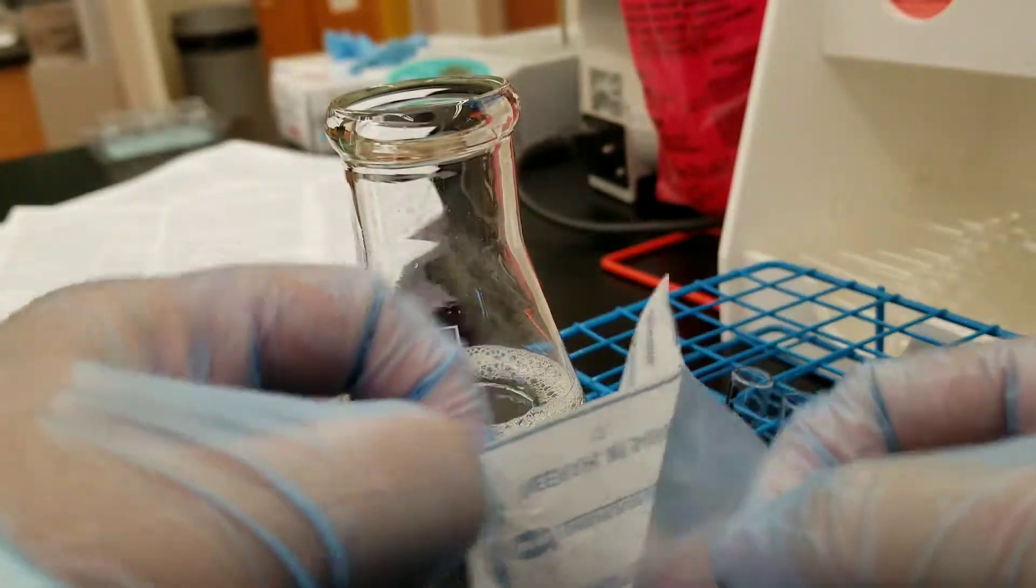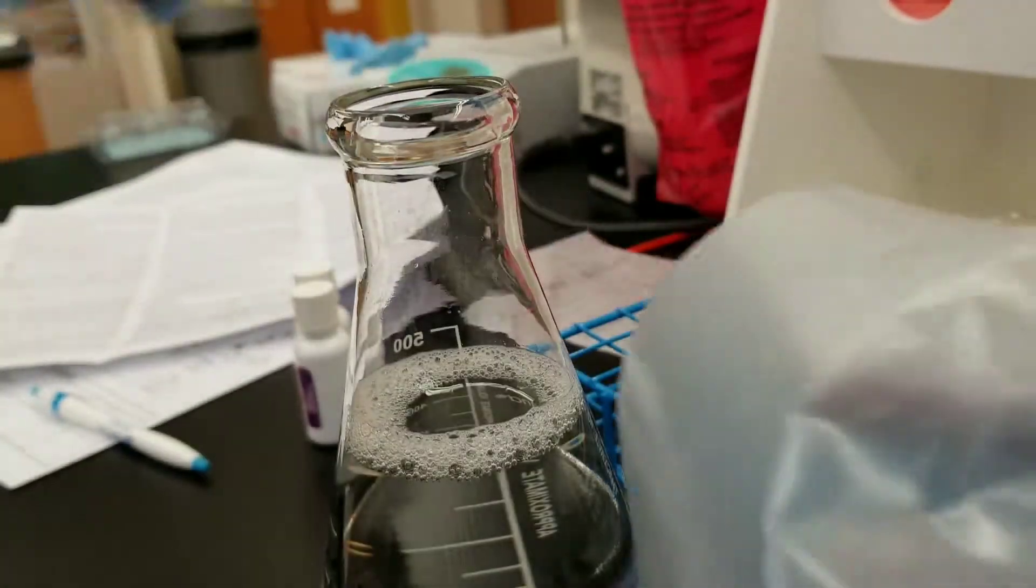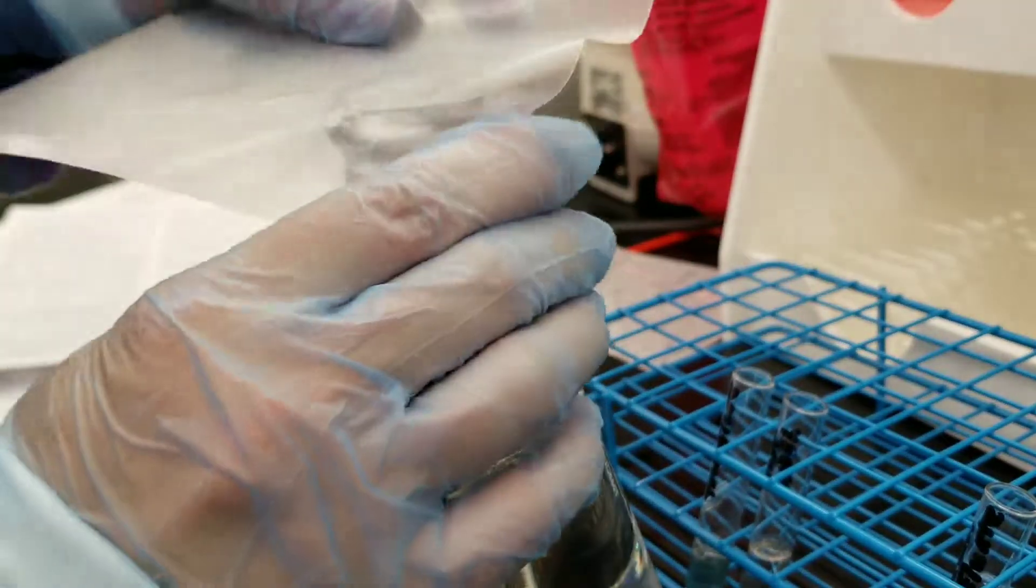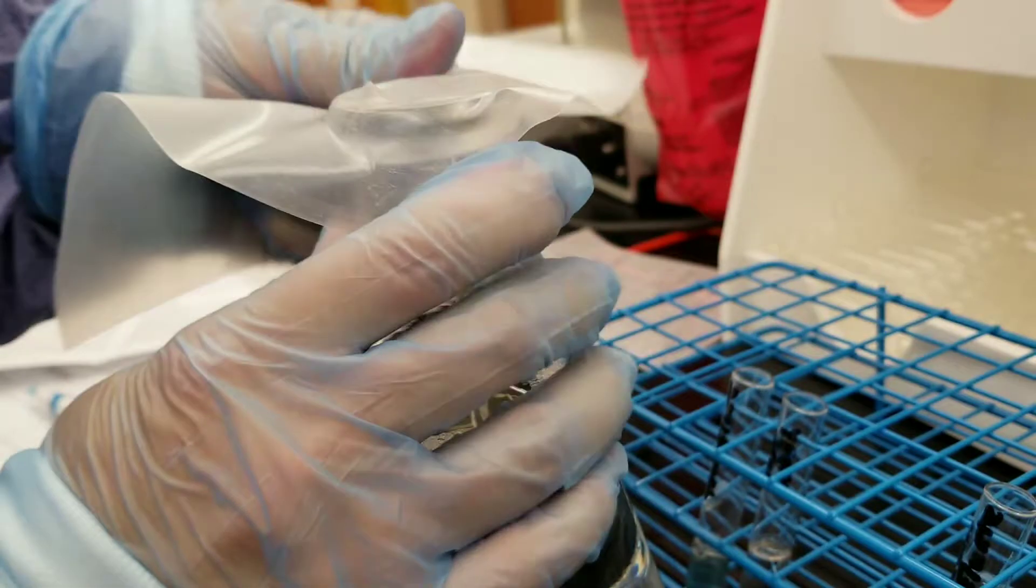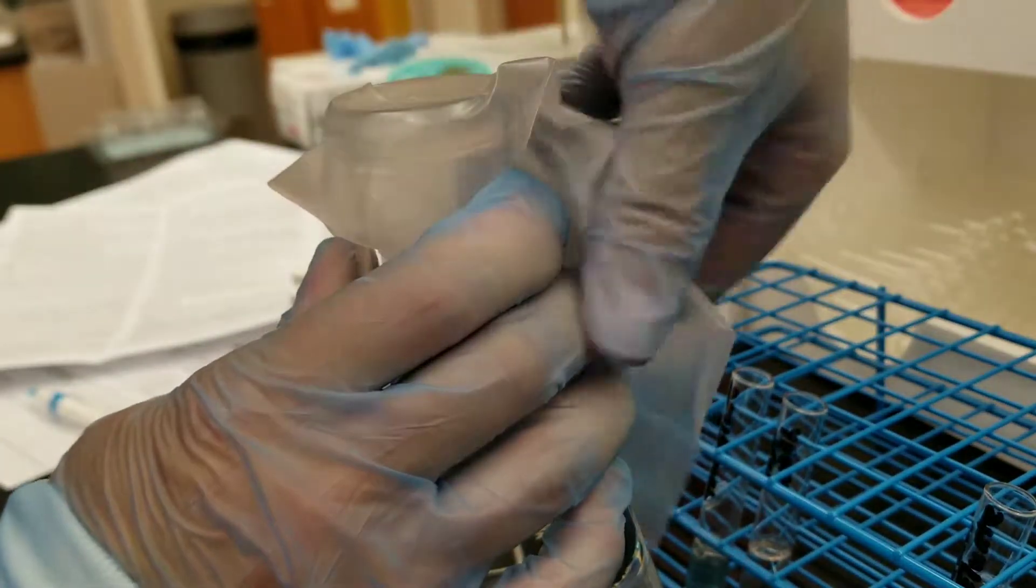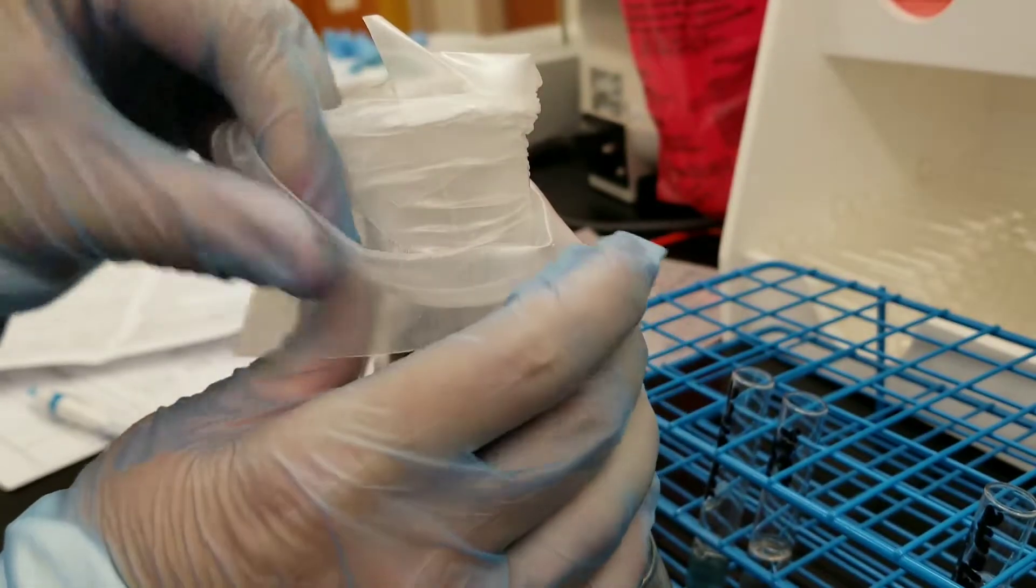So this is the working wash solution that we made in the elution video. You just hold it down, stretch it across and wrap it around.